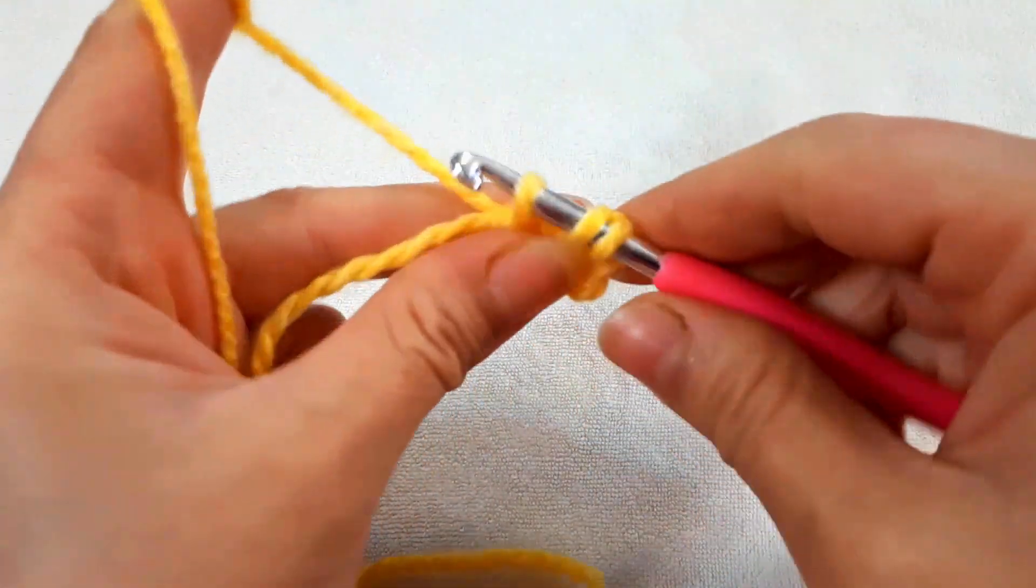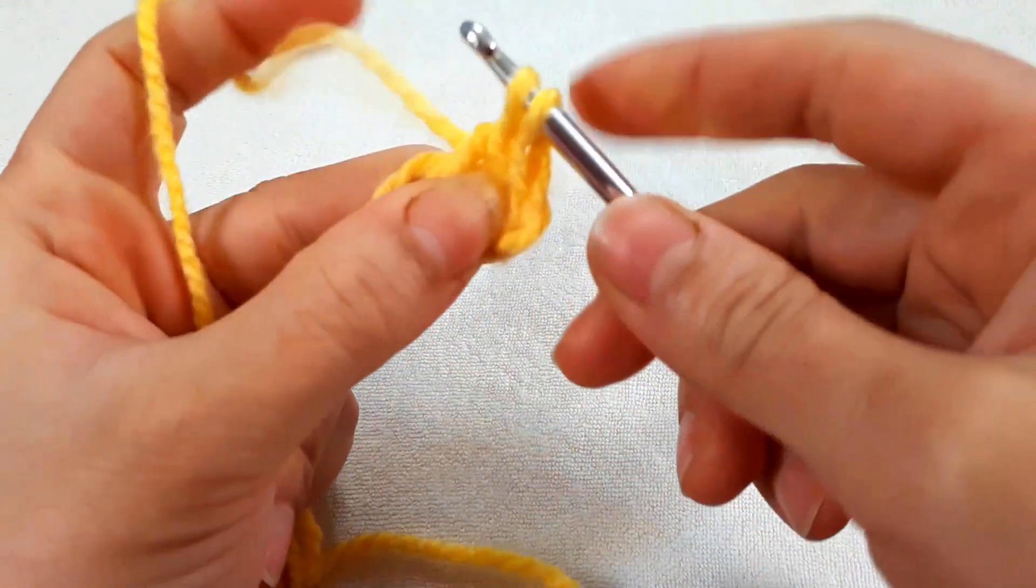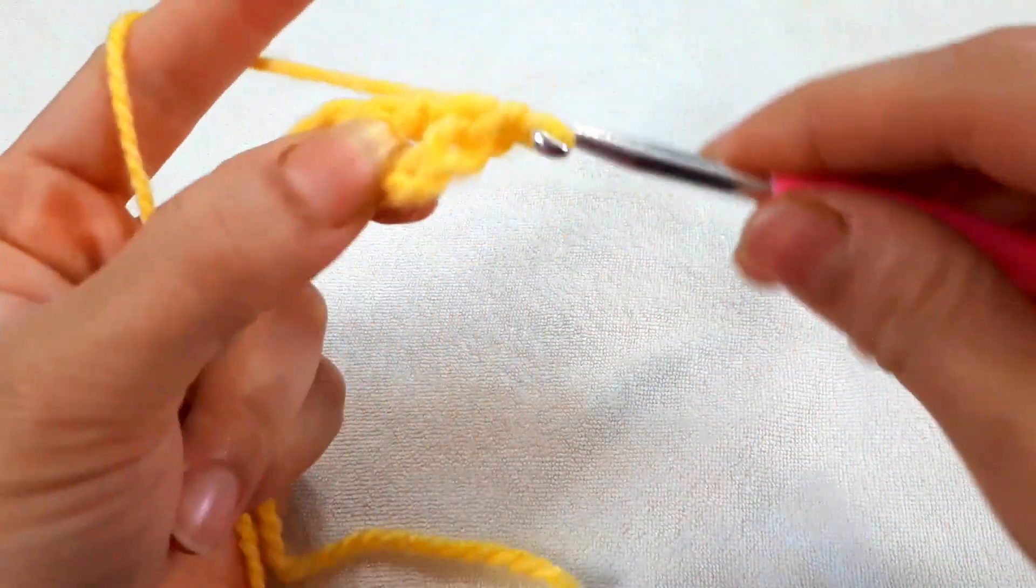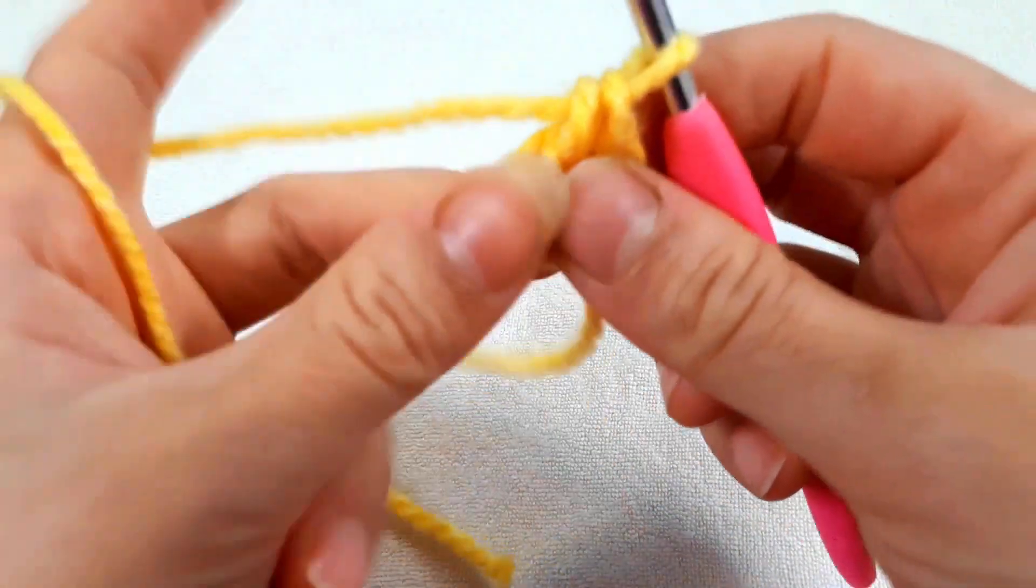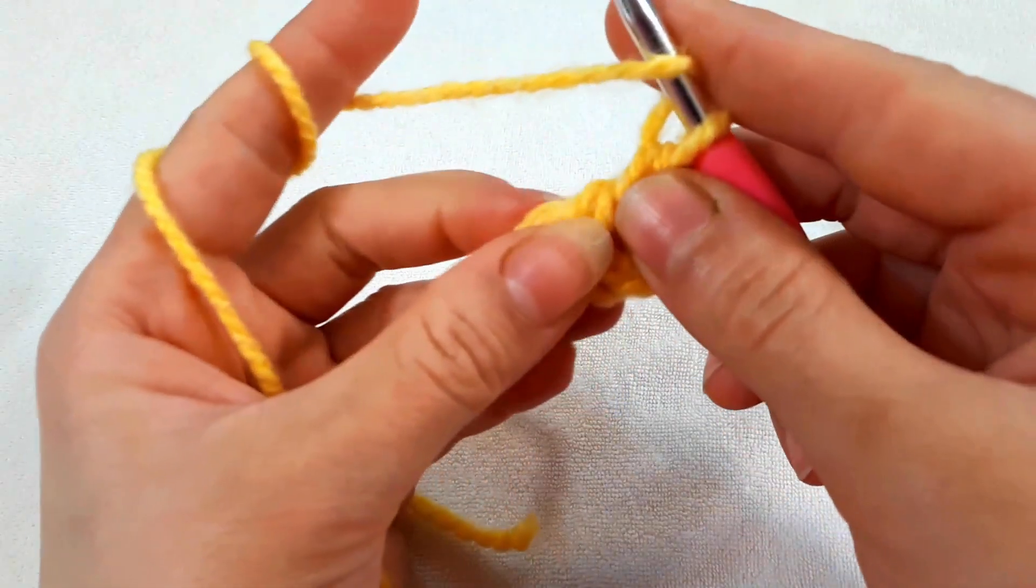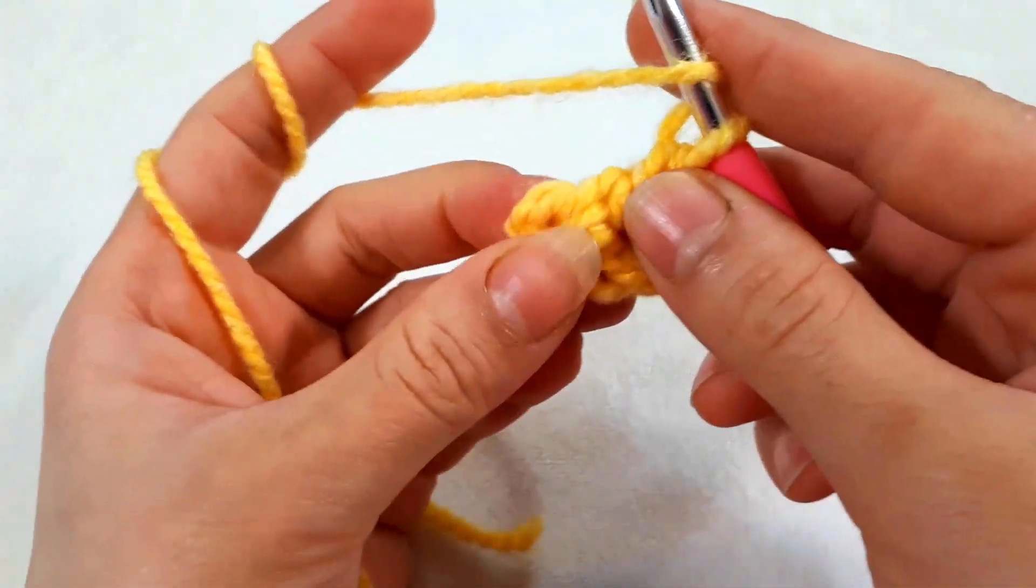Yarn over, pull through two. Yarn over, pull through two. Yarn over, pull through two. And then crochet your pattern in the ring.